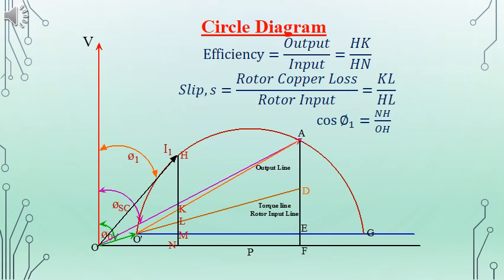To find the efficiency, we take the ratio of HK to HN, where HK corresponds to the output and HN corresponds to the input. The portion above the output line, HK, is the output, and the entire vertical length HN is the total input. To find the slip S, recall that rotor copper loss equals S times the air gap power, or S times the rotor input. From this, slip S can be calculated. The power factor cos phi1 equals NH divided by OH, which is the same as I1 cos phi divided by I1.